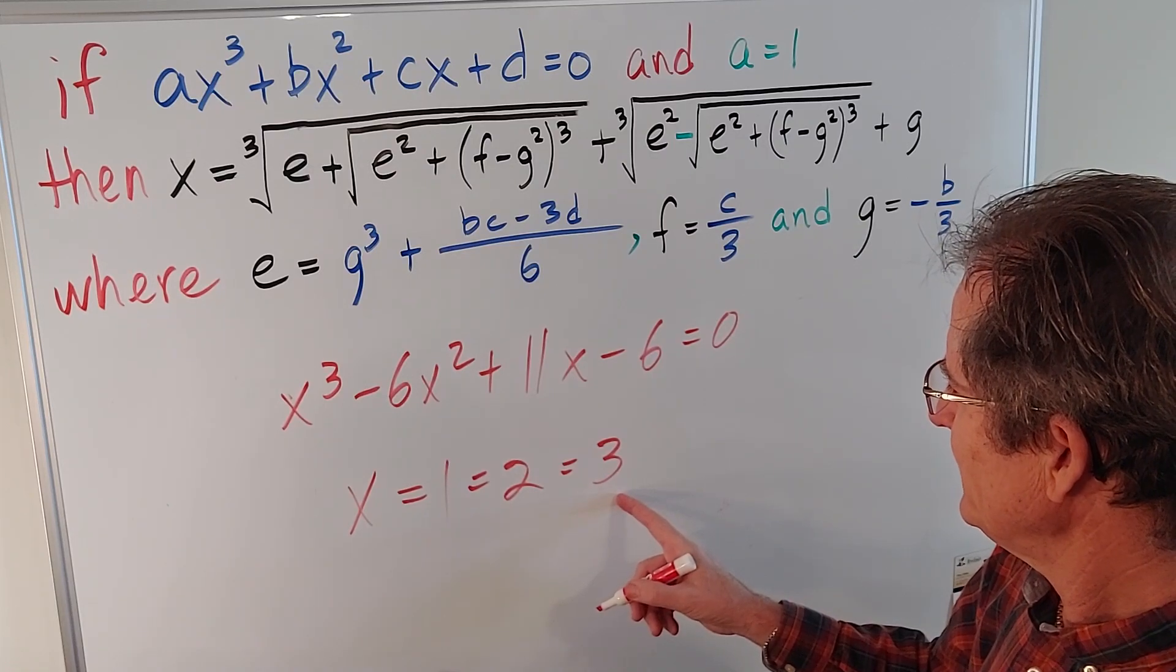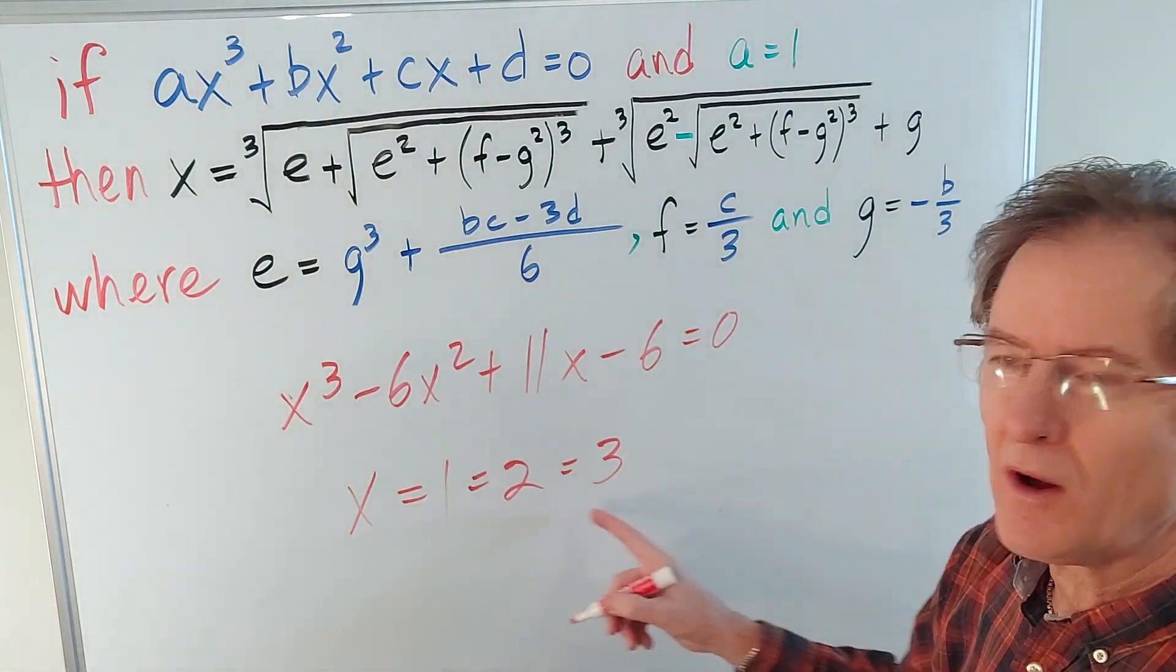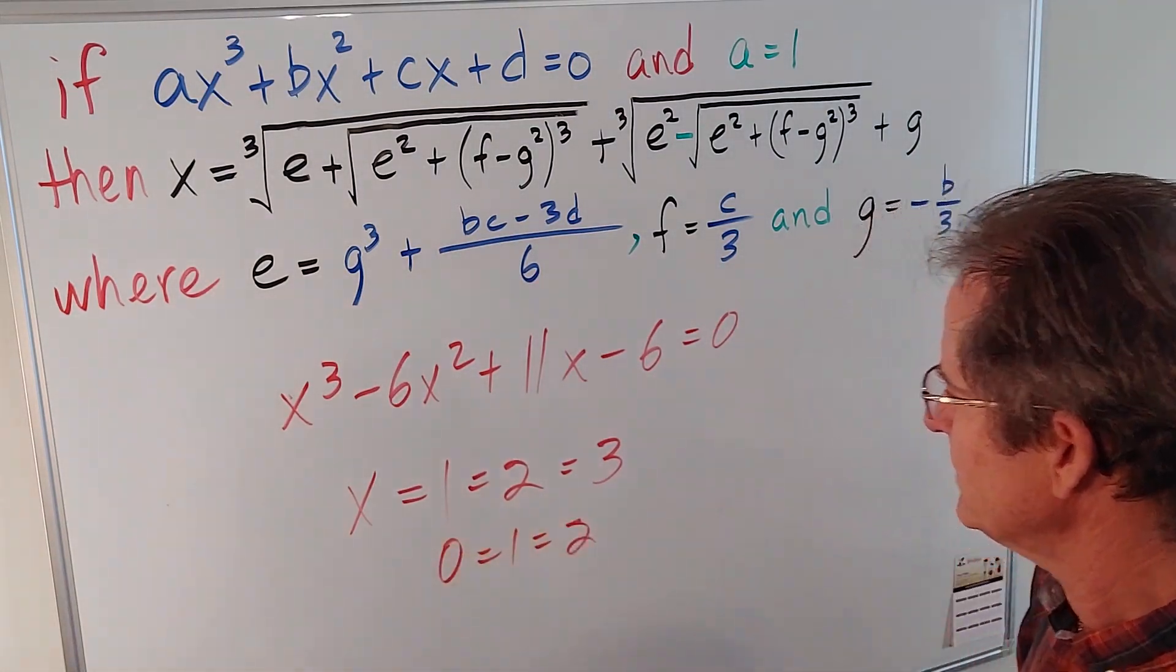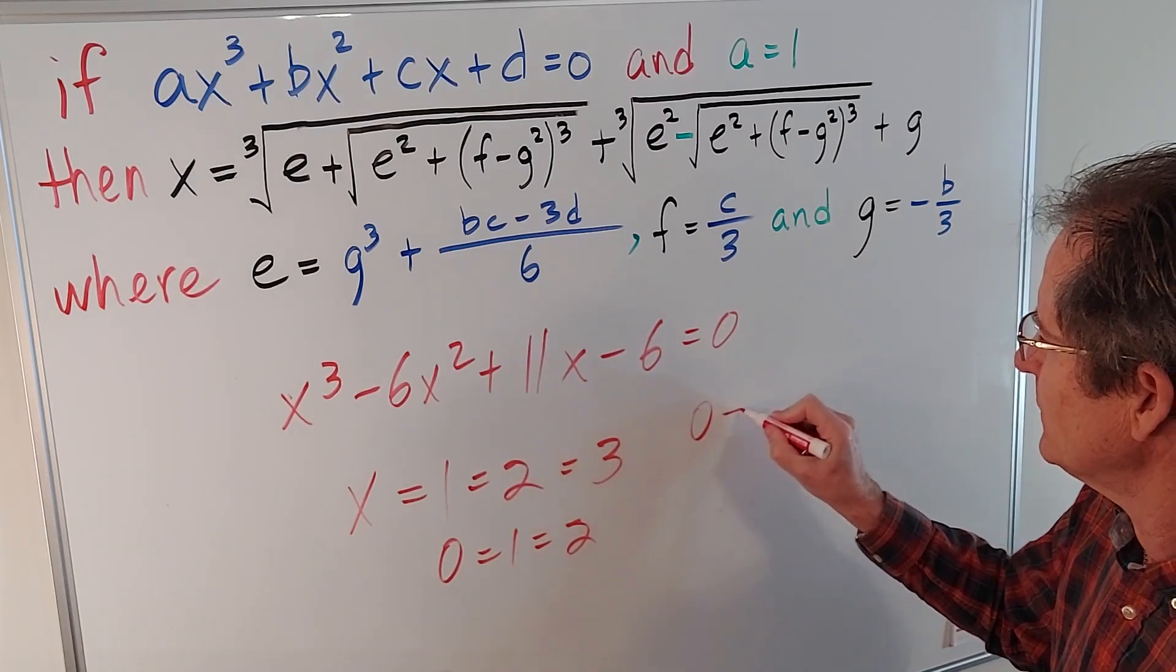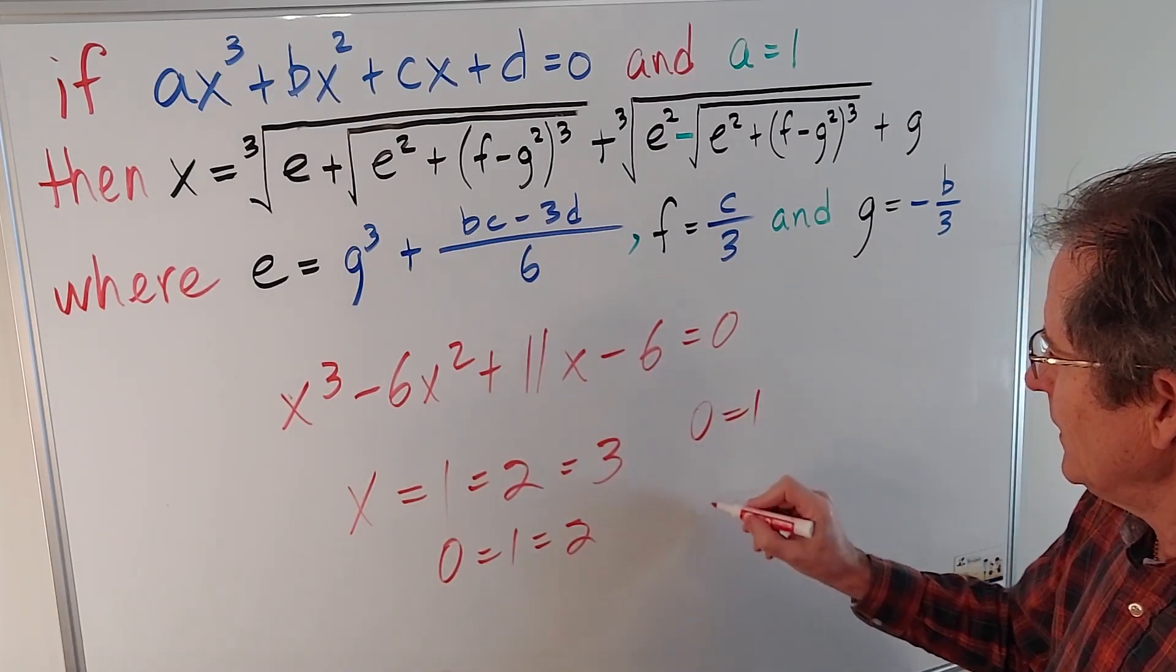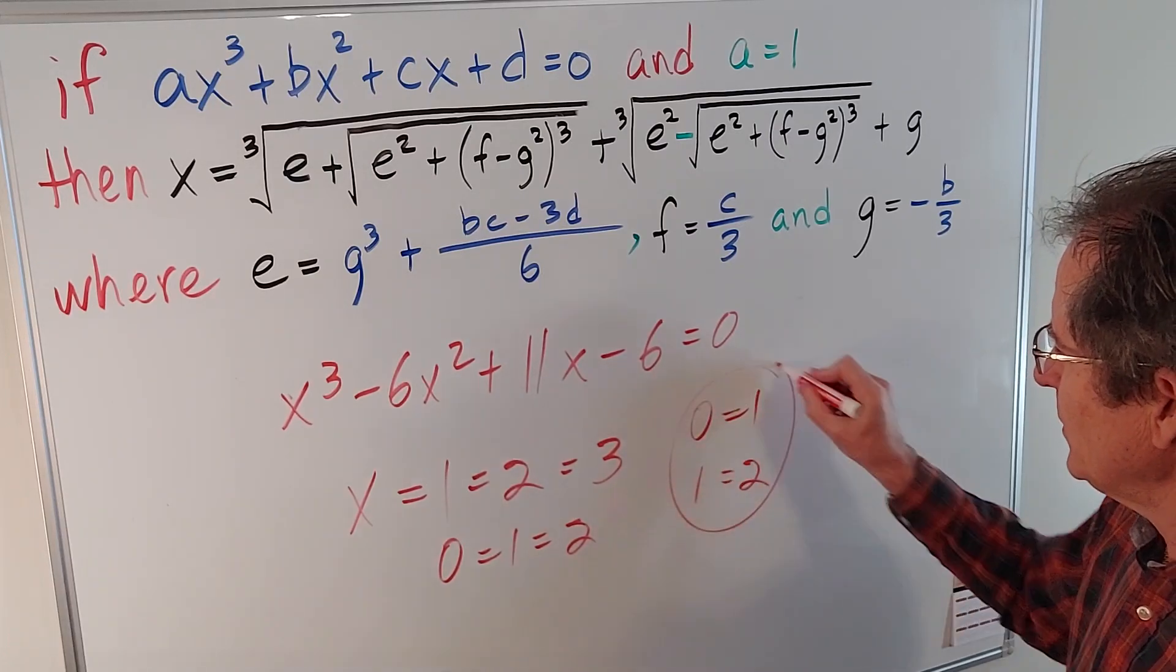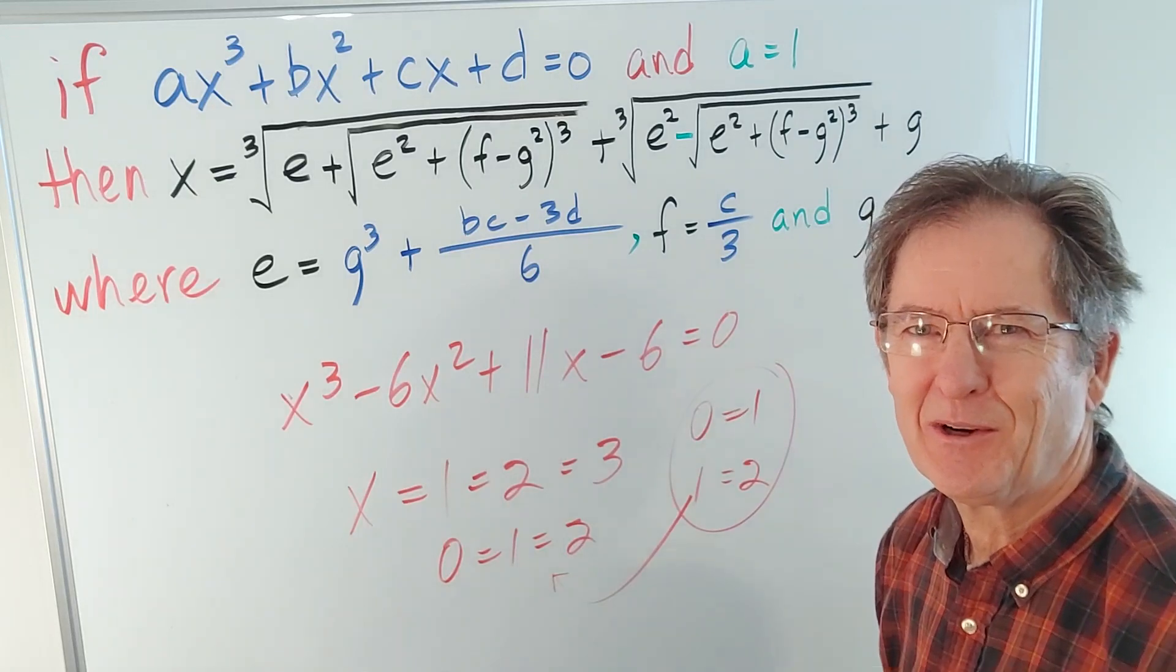Interesting. If I subtract 1 from all of those, I get 0 equals 1 equals 2. Well, that makes sense because I previously proved that 0 equals 1. And I've several times proved 1 equals 2. So if you put those two together, sure enough, that's true.